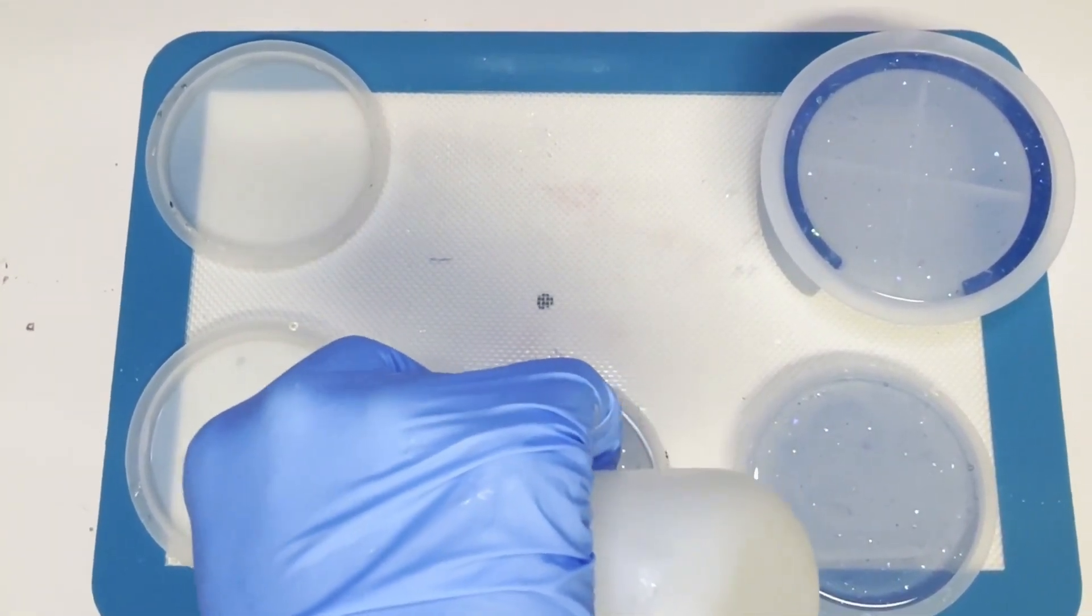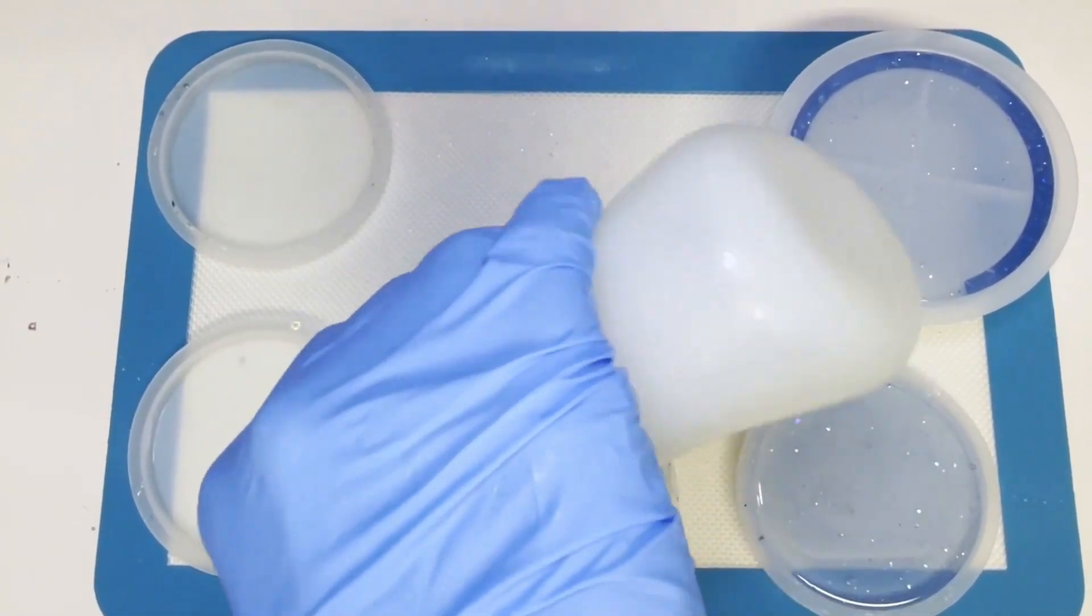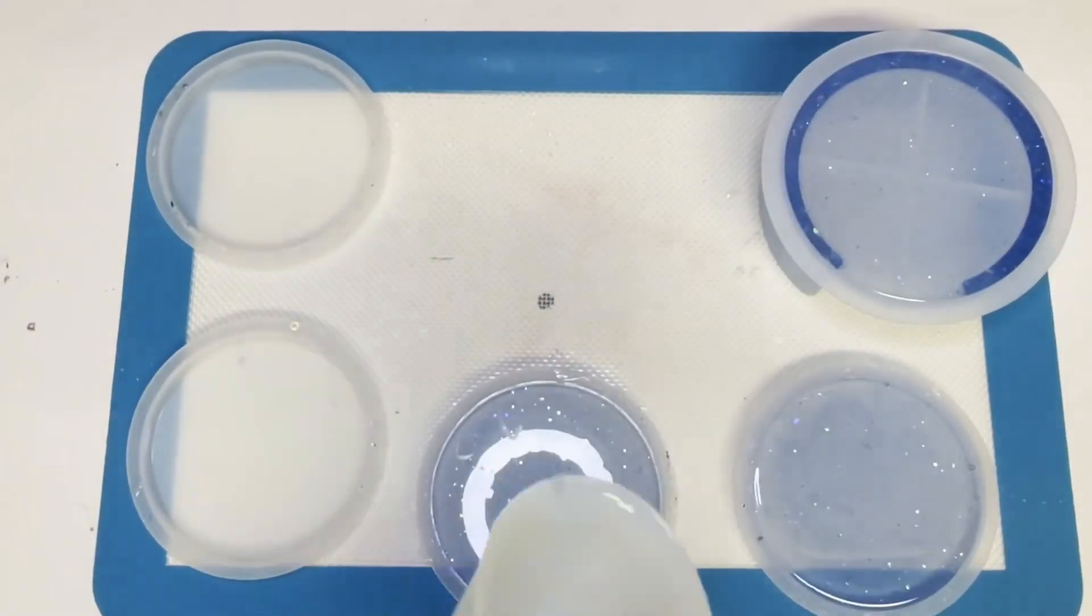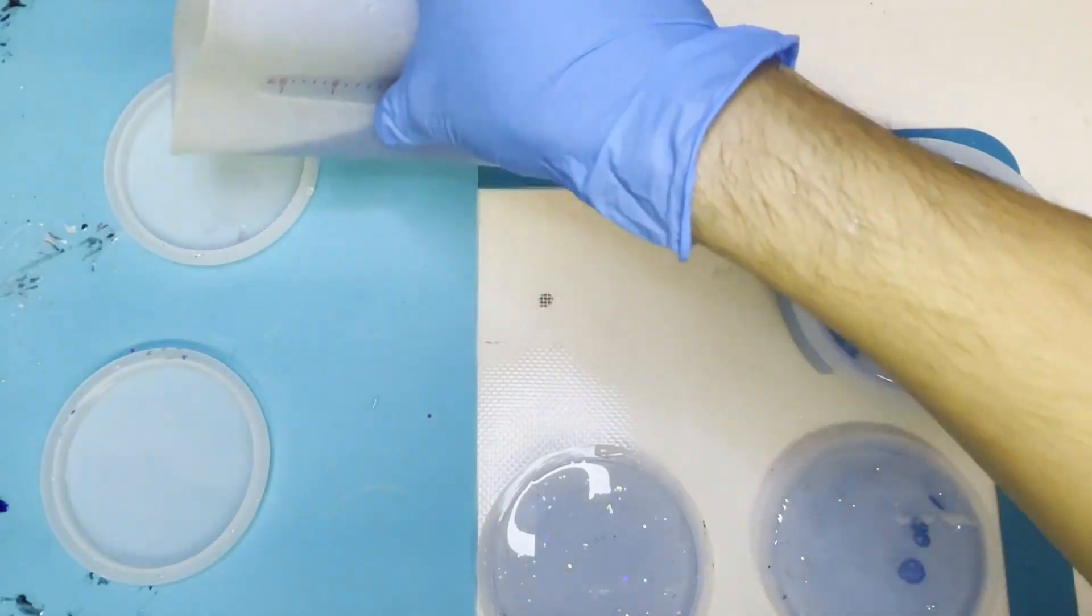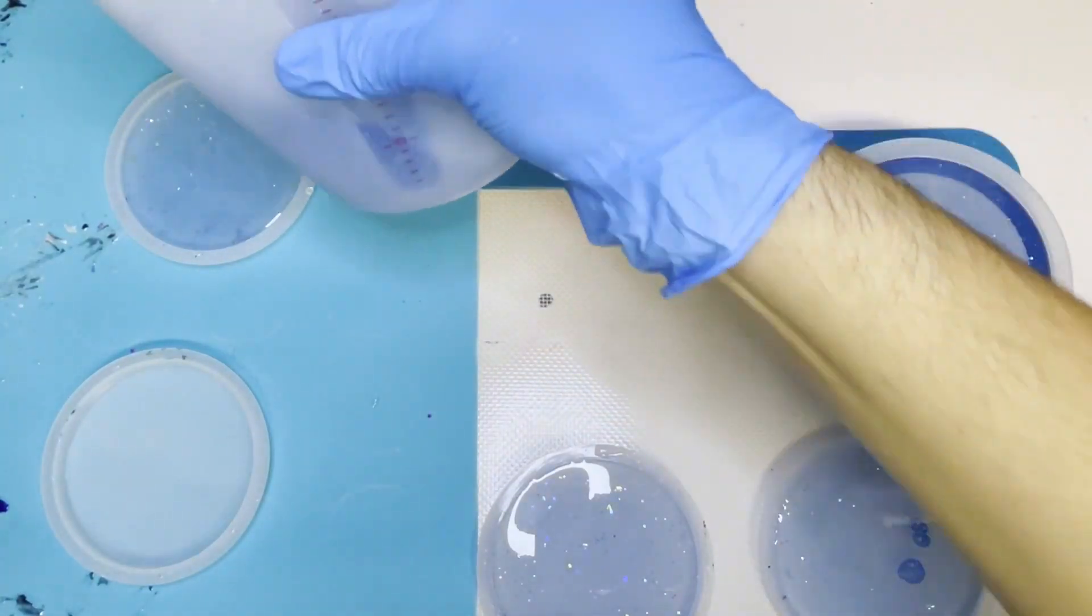I'm going to follow the exact same steps as I did last time: one hundred of A, one hundred of B, five drops of navy blue and one scoop of the glitter. And fill up the last two molds.